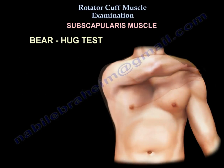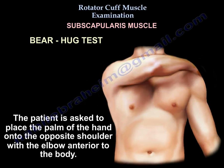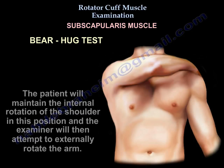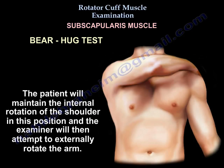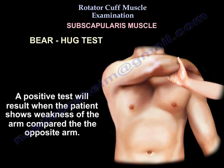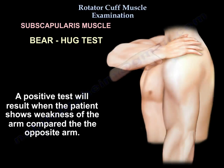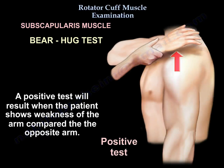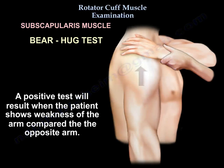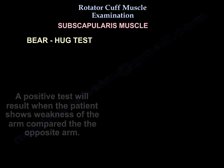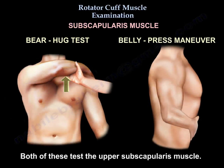In the bear hug test, the patient is asked to place the palm of the hand onto the opposite shoulder with the elbow anterior to the body. The patient will maintain internal rotation of the shoulder in this position. The examiner will then attempt to externally rotate the arm. A positive test results when the patient shows weakness of the arm compared to the opposite arm. Both the belly press and bear hug tests test the upper subscapularis.